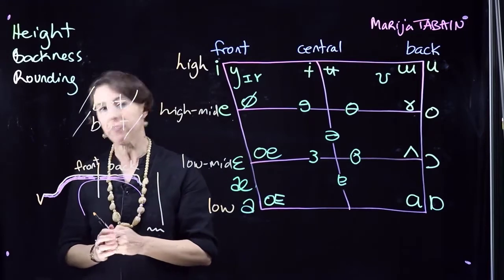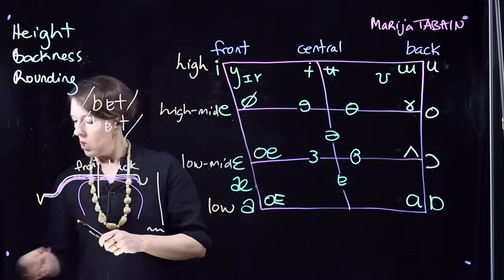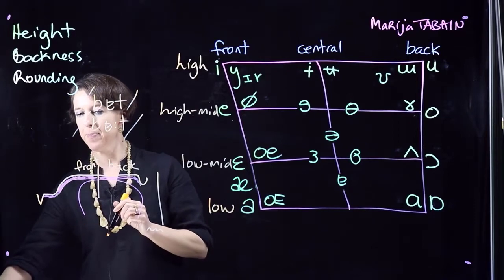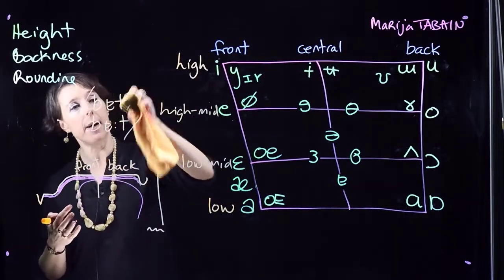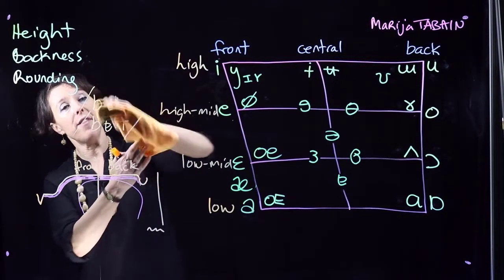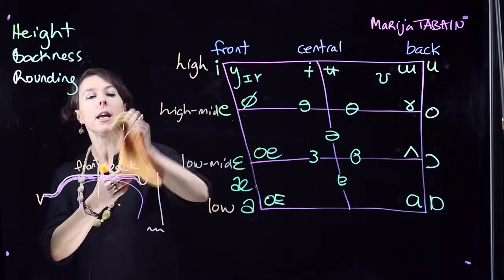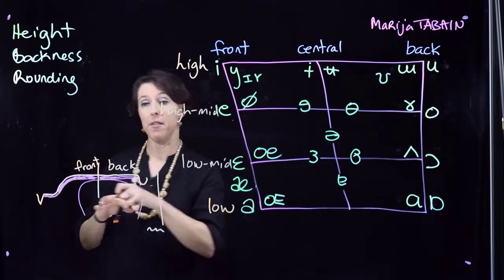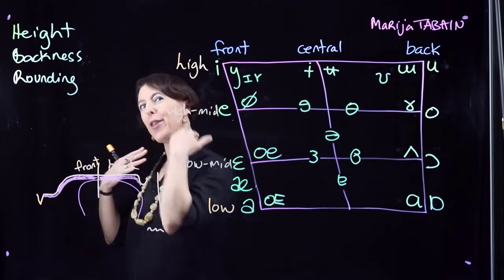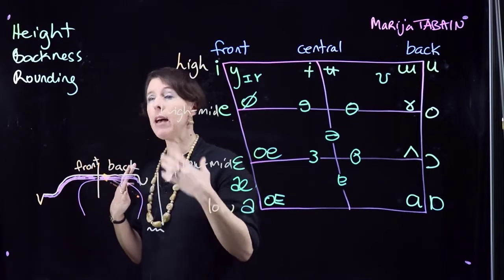What else can languages do? They can add nasalization on their vowels. We've been assuming oral vowels, but it's possible to have a vowel where the air is flowing through the oral cavity but at the same time flowing through the nasal cavity.